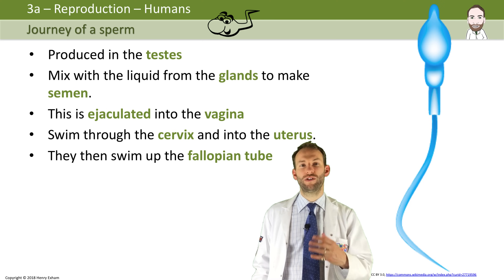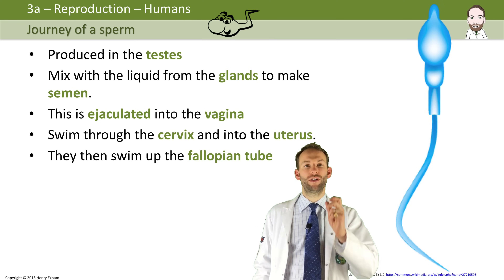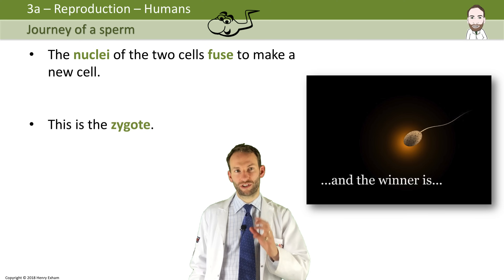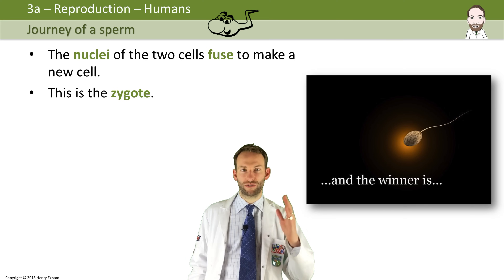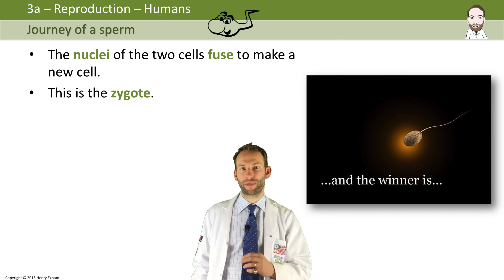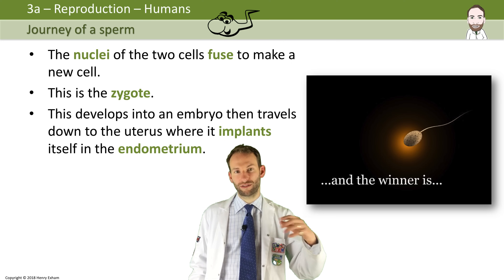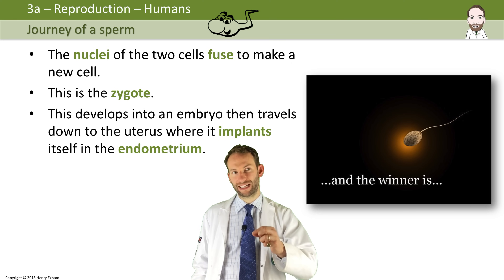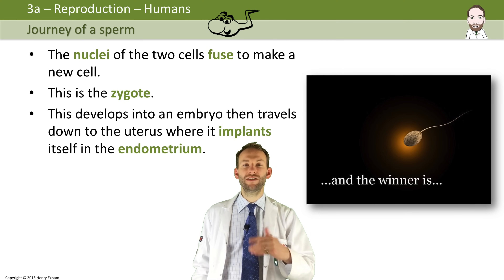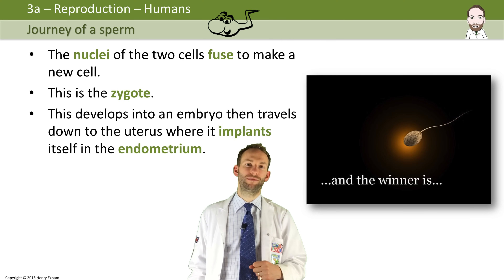As the sperm fertilizes the egg, it will lose its tail. Those two nuclei then fuse and they form the zygote — that first cell that we all started life as — a combination of a sperm from our father and an egg from our mother. That zygote develops into an embryo, which then travels back down into the uterus where it implants into the endometrium, the lining of the uterus, and that's where the baby will develop.